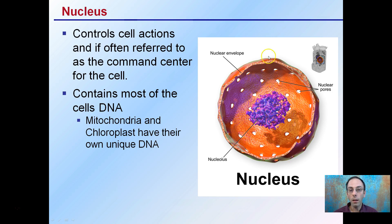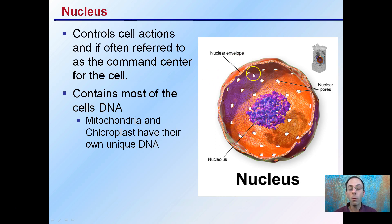On the outside of the nucleus, we have the nuclear envelope. There are nuclear pores here that regulate what can come in and what can come out. Because this is the command center, it's very important — the cell keeps this information protected.